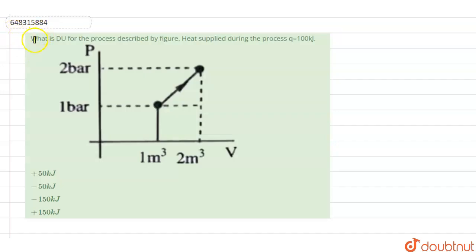is what is ΔU for the process described by the figure when heat supplied during the process Q is equal to 100 kilojoules. This is the PV curve given, and from this we have to calculate the internal energy and choose the correct option amongst the given options.